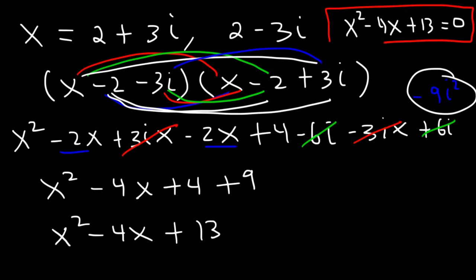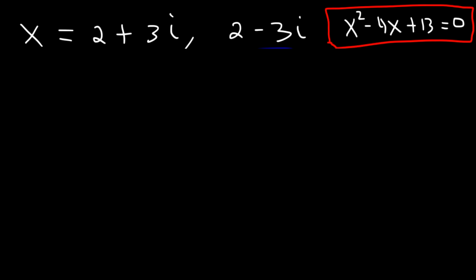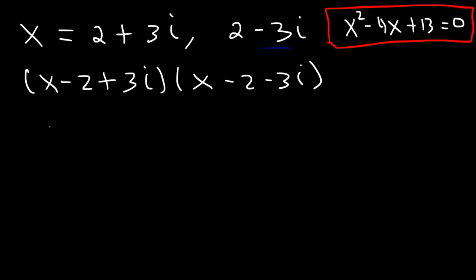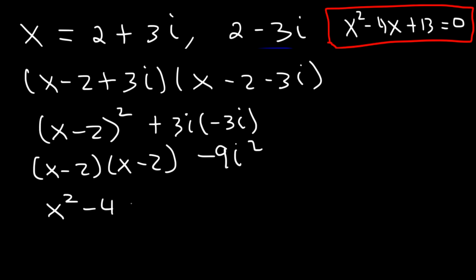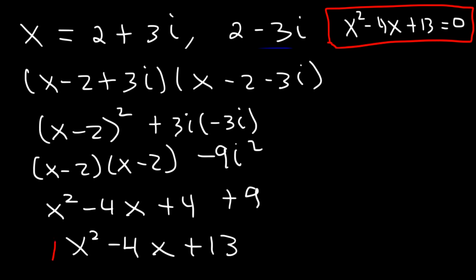Now using the shortcut method to save time: (x minus 2 plus 3i)(x minus 2 minus 3i) is equivalent to (x minus 2) squared plus 3i times negative 3i, which is negative 9i squared. Expanding: (x minus 2) squared is x squared minus 4x plus 4, and negative 9i squared is positive 9. So 4 plus 9 is 13, giving the same answer much faster.